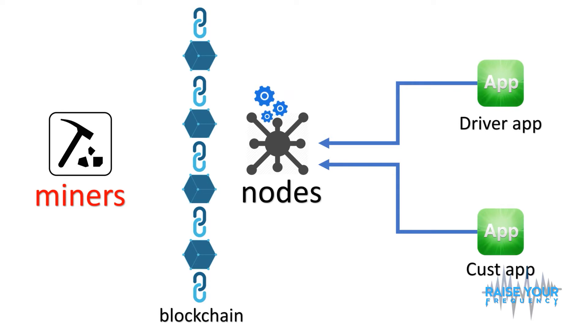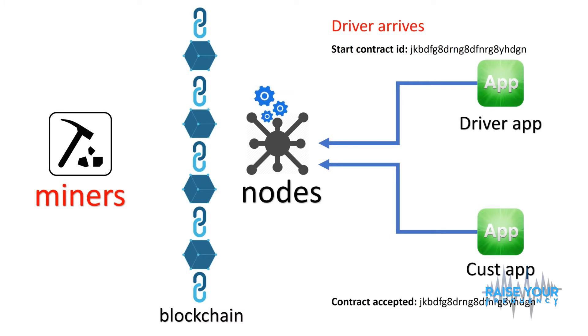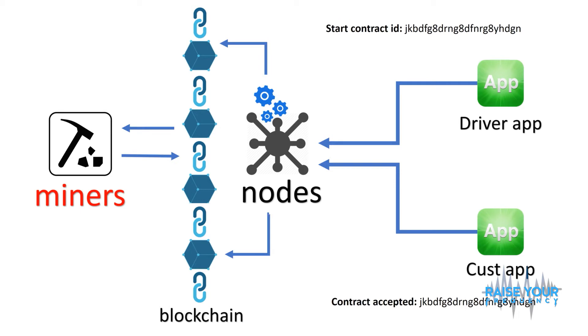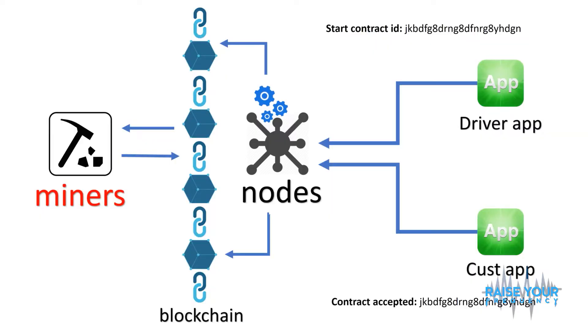Now the nodes have all this information. The driver arrives and starts a contract, which the customer agrees to or not. If the customer accepts — contract accepted — then the miners grab this from the nodes and it goes into the blockchain. Initially when the driver starts the app, his ID and rating are put into the blockchain. Nothing else goes in until the contract starts.